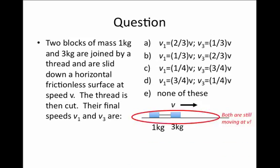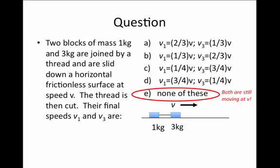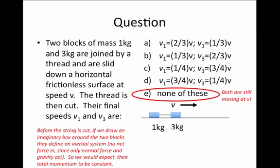Well, if we think about this problem, the answer to this will be that none of the choices given here—that V1 and V3 are both still just equal to the initial speed, V. And why is this the case? Because when this string is cut, or even before this string is cut, we may identify this pair of masses as an inertial system.